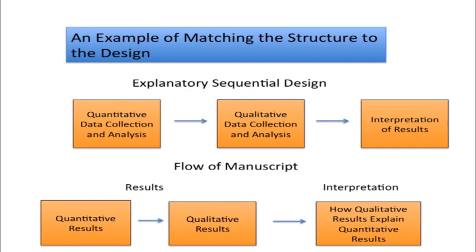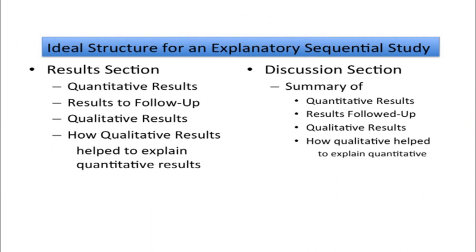Here's an example of the explanatory design structure. In the results section, it might set up this way: first, the quantitative results; then what results are going to be followed up on — those could be demographic factors, significant results, non-significant results, or significant predictors. Then in the results you would see the qualitative results presented. And then finally, how the qualitative results help to explain the quantitative results.